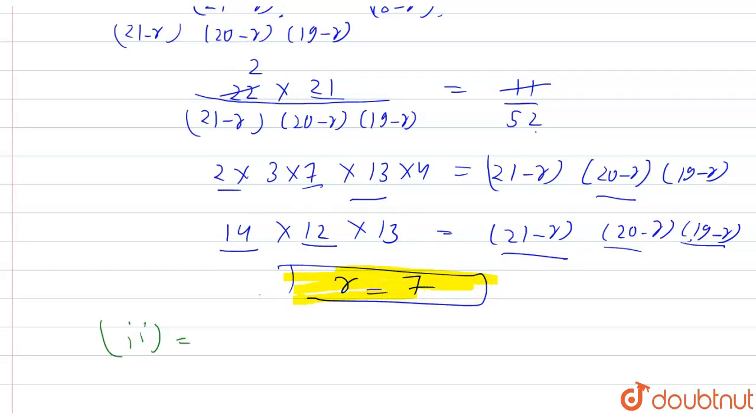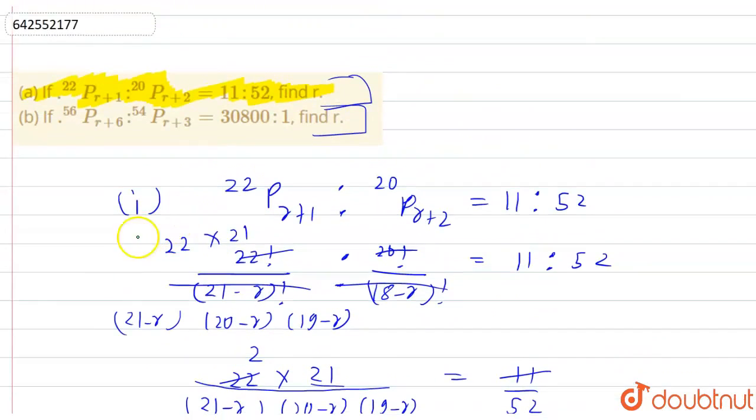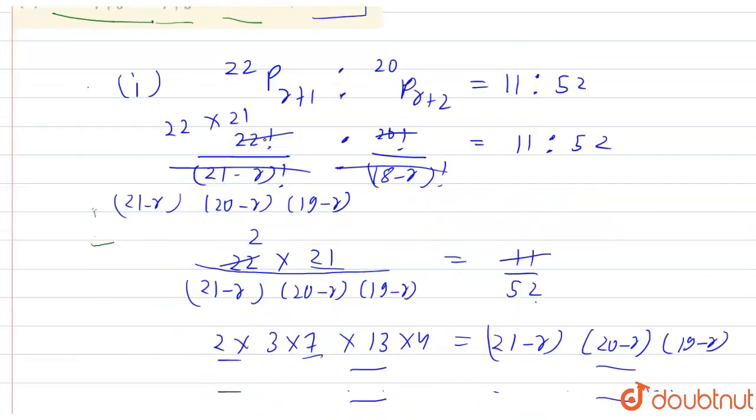Now, let's talk about second part. It is given 56 PR plus 6 raise to 54 PR plus 3 is equal to 30,800 raise to 1.